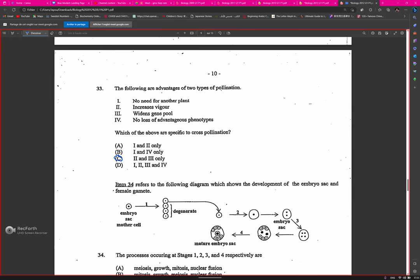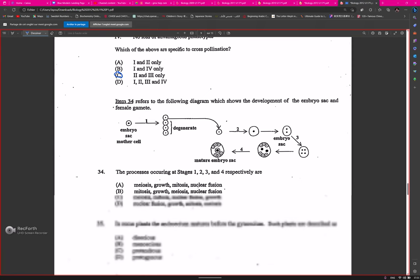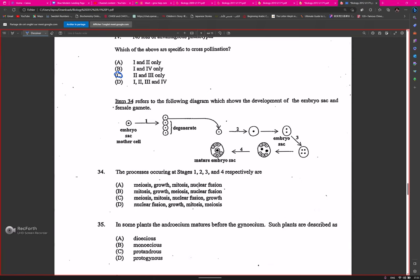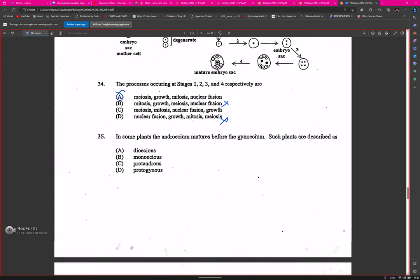The processes occurring at stages one, two, three, and four: stage one has meiosis, which eliminates D and B from our answers. Two is growth, so it confirms A as the answer. In some plants, the androecium matures before the gynoecium. Such plants are described as protandrous, beautiful.